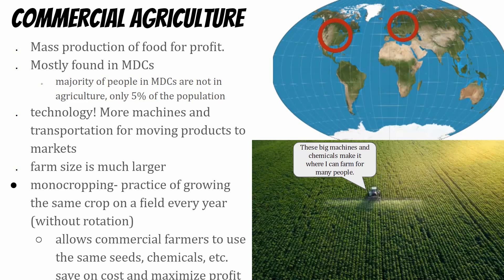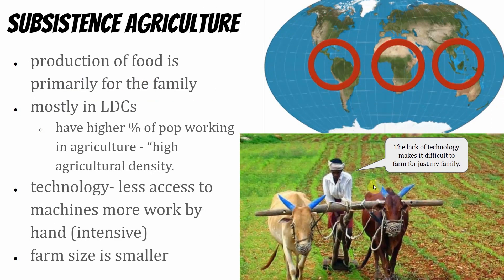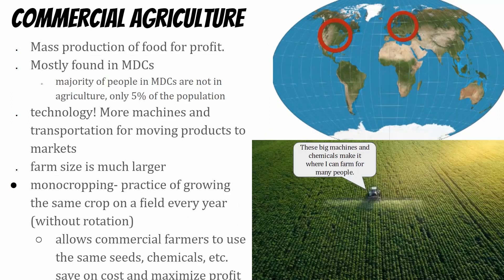In a more developed country, there are fewer farmers because machinery allows one person to farm for lots of people. In less developed countries, more people have to farm due to less technology. That's called agricultural density. If there are more people farming, it generally tells you it's a less developed country. If there are fewer people farming, it's probably a more developed country — an inverse proportion.